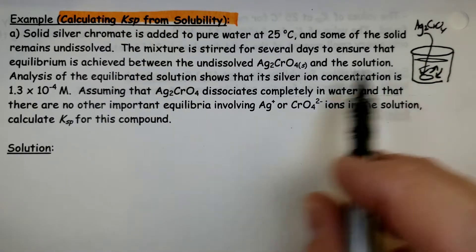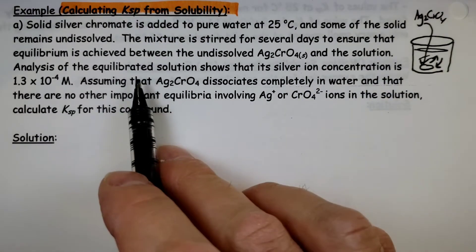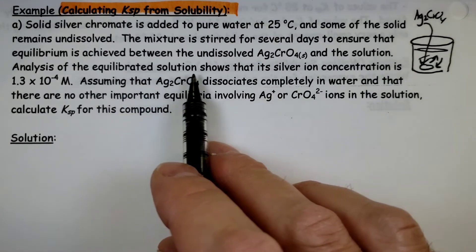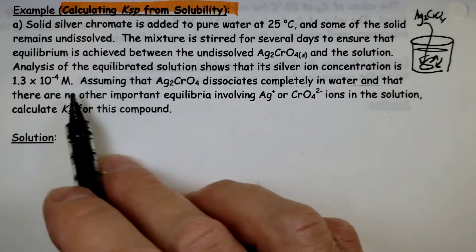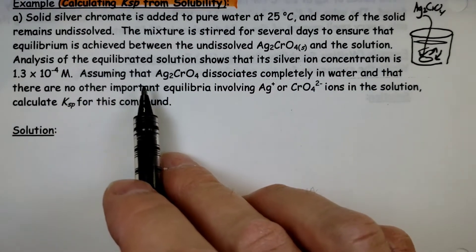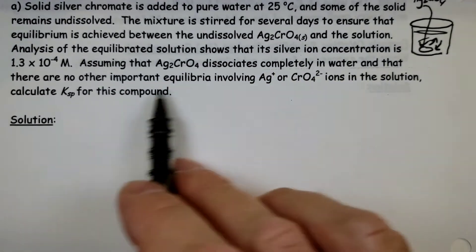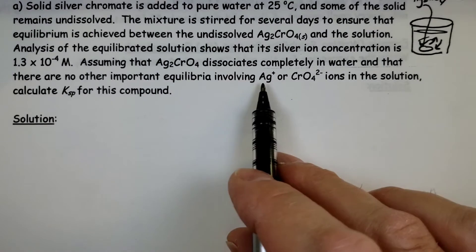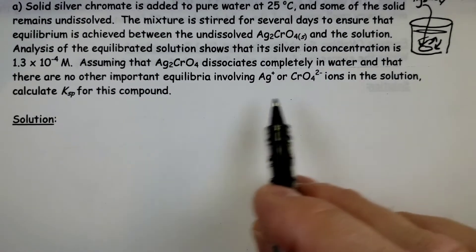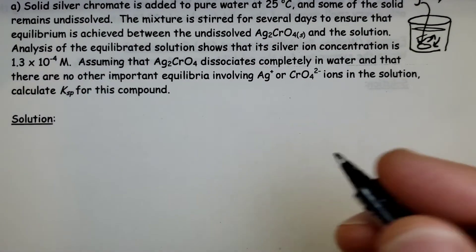The silver and chromate ions floating around. Analysis of the equilibrated solution shows that the silver ion concentration is 1.3 times 10 to the minus 4 M. Assuming that silver chromate dissociates completely in water and that there are no other important equilibria involving Ag+ or CrO42- ions, calculate the Ksp.